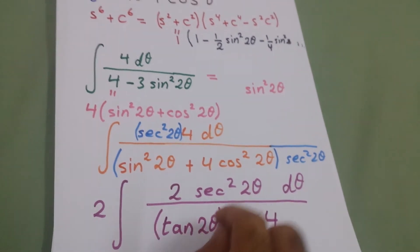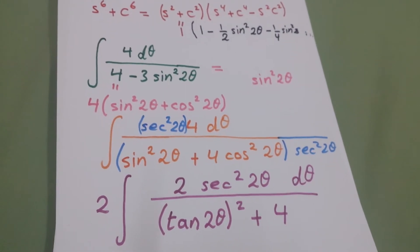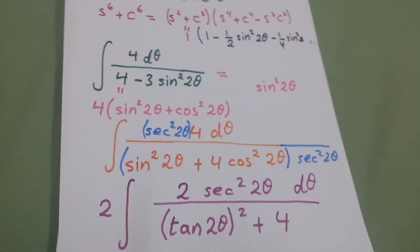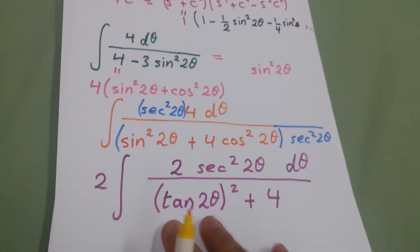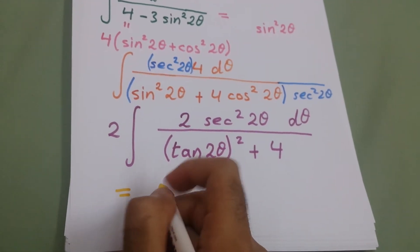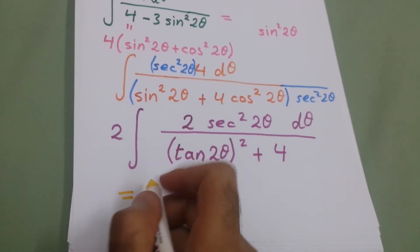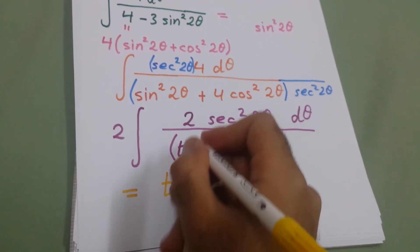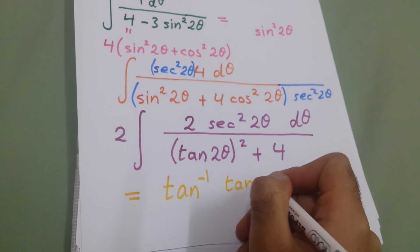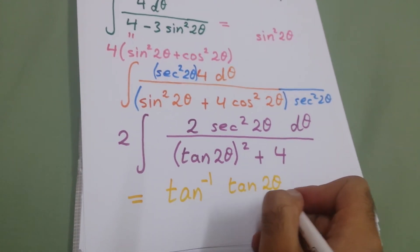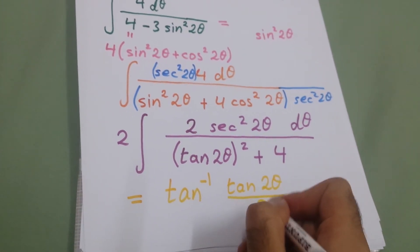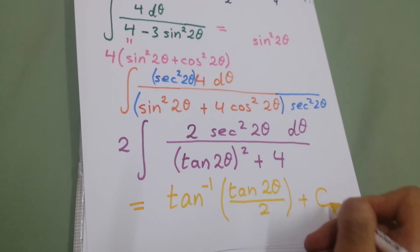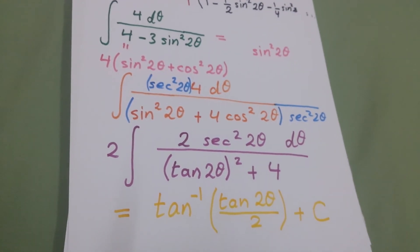The derivative of tan(2θ) appears, so we let u = tan(2θ), giving du. The integral becomes u² + 4, and the final answer is 2 times one-half times tan⁻¹(u/2), which equals tan⁻¹(tan(2θ)/2) plus a constant. Thank you for your attention — see the other integrals.